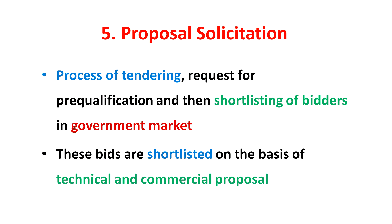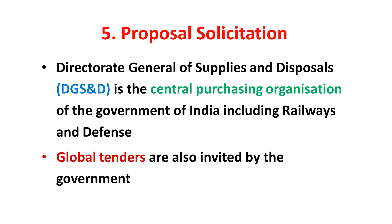The fifth stage is Proposal Solicitation. Proposals are sought by the business buyer for various products and services. In India, in the case of buying by the government market, there is a process of tendering, request for pre-qualification, and then shortlisting of bidders. These bids are shortlisted on the basis of technical and commercial proposals. The Directorate-General of Supplies and Disposals, widely known as DGS&D, is the central purchasing organization of the Government of India, including railways and defense. Sometimes global tenders are also invited by the Indian government.